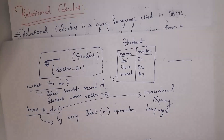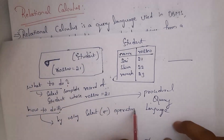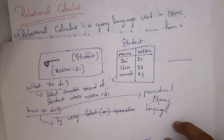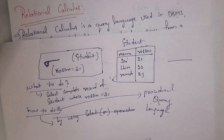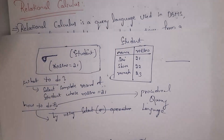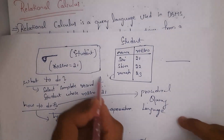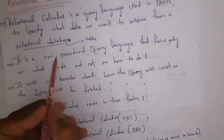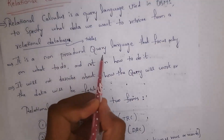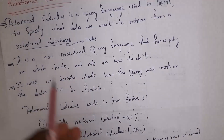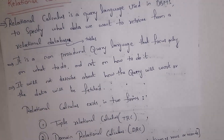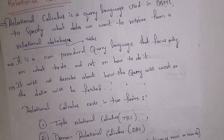Whereas in relational calculus we focus only on what to do and we will not focus on how to do it, so we call relational calculus a non-procedural query language. We will not give any procedure to solve a query. It will not describe how the query will work or how data will be fetched — it will just explain what to do.